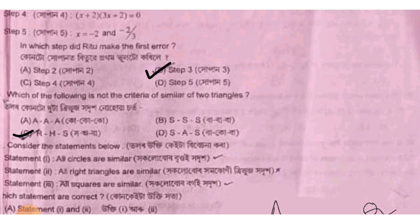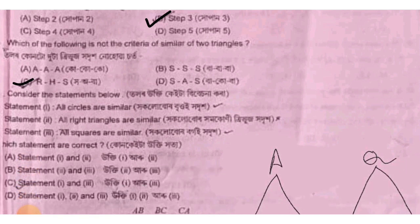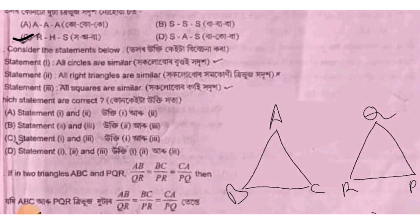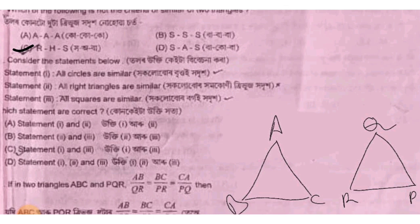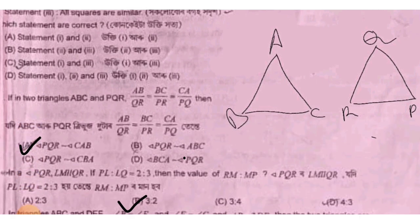Continuing with 3x squared plus 4x minus 4 = 0: grouping gives 3x(x plus 2) minus 2(x plus 2) = 0, so (3x minus 2)(x plus 2) = 0. Option B is the answer. Next question involves statement one and statement two; option C is correct.